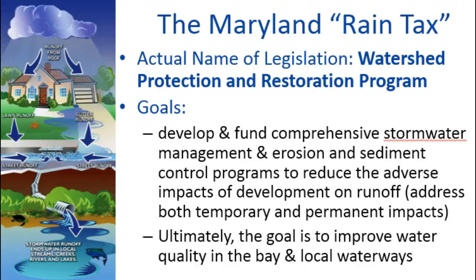We have a somewhat controversial law in place in Maryland that's getting a lot of attention about impervious surfaces. You probably know it as the 'rain tax,' but that's a term politicians made up — it's actually called the Watershed Protection and Restoration Program. The whole point is to develop better stormwater management and erosion control to reduce the bad impacts of impervious surfaces and runoff coming off into the bay, to improve water quality. All counties are technically liable, though some had already implemented a stormwater remediation fee before this law.